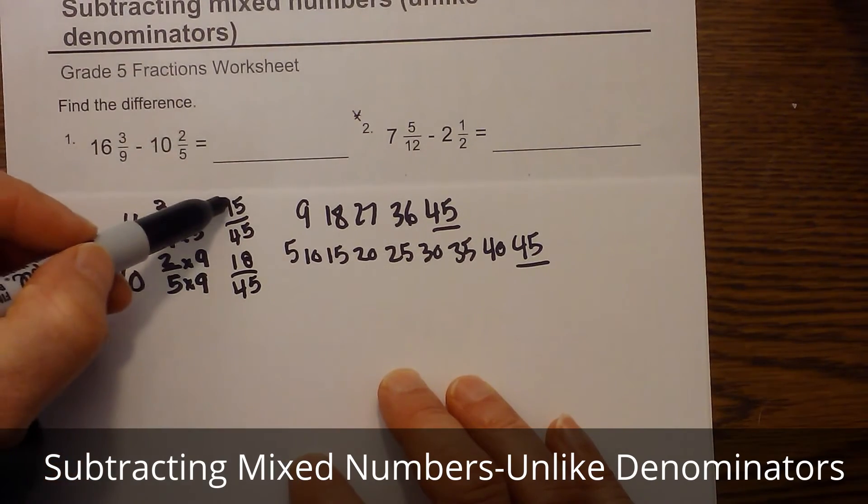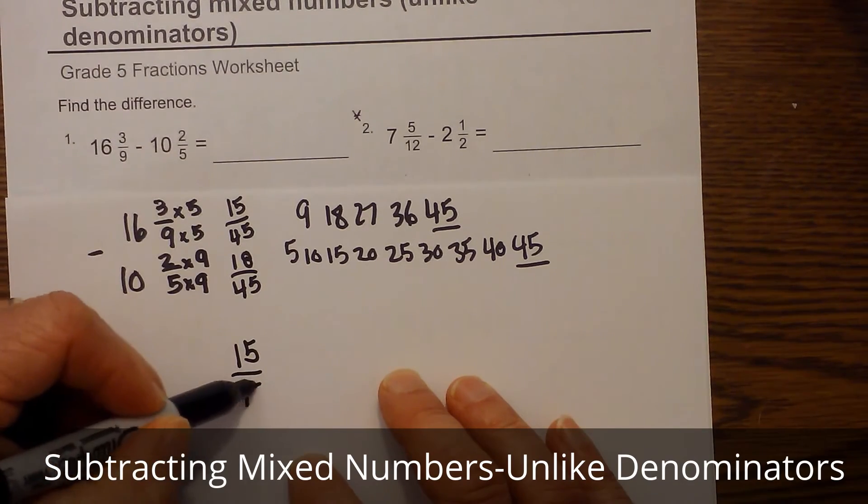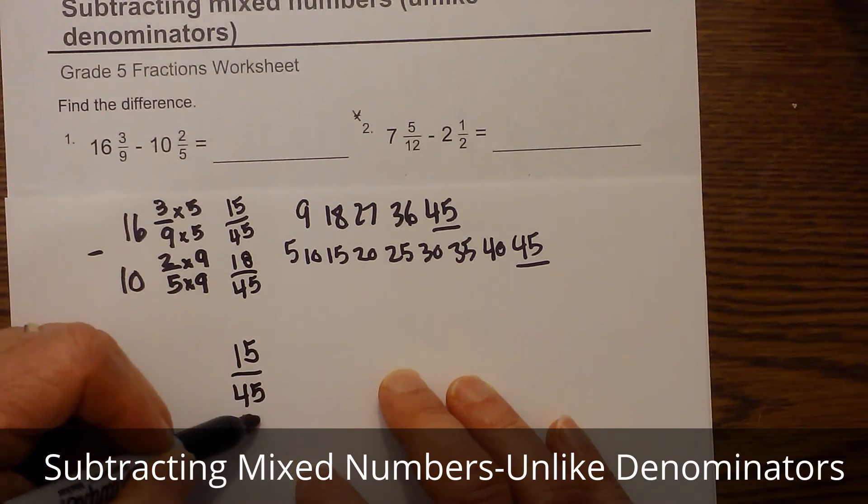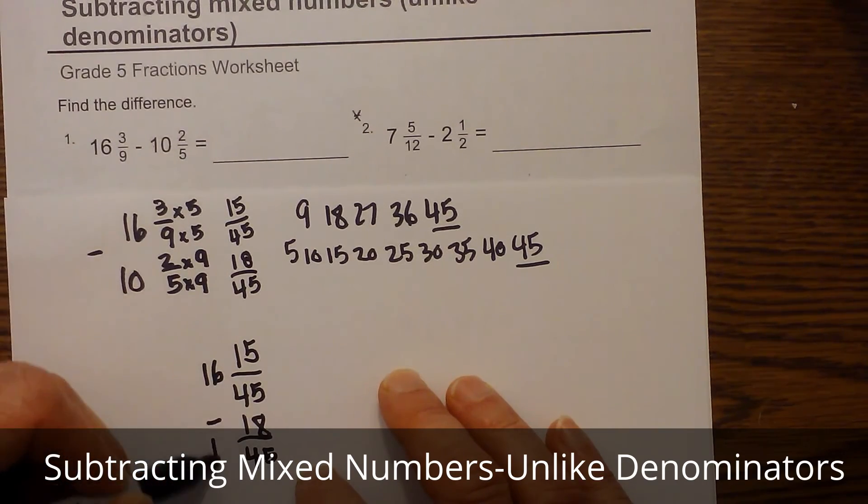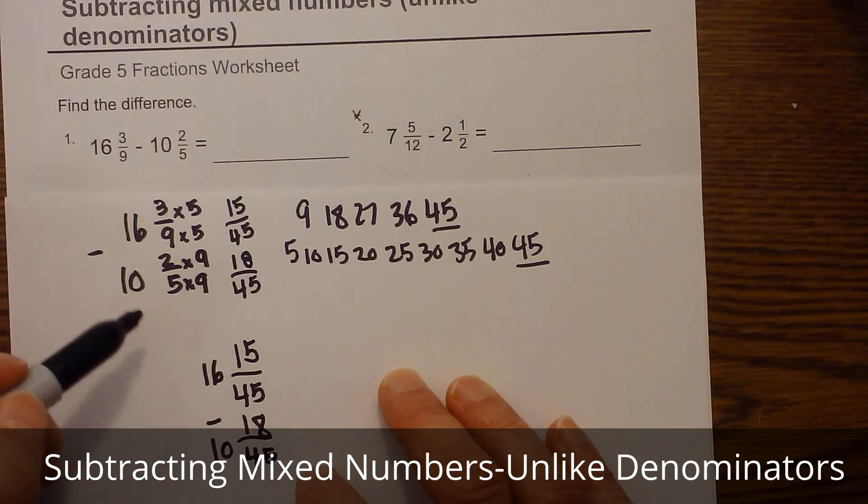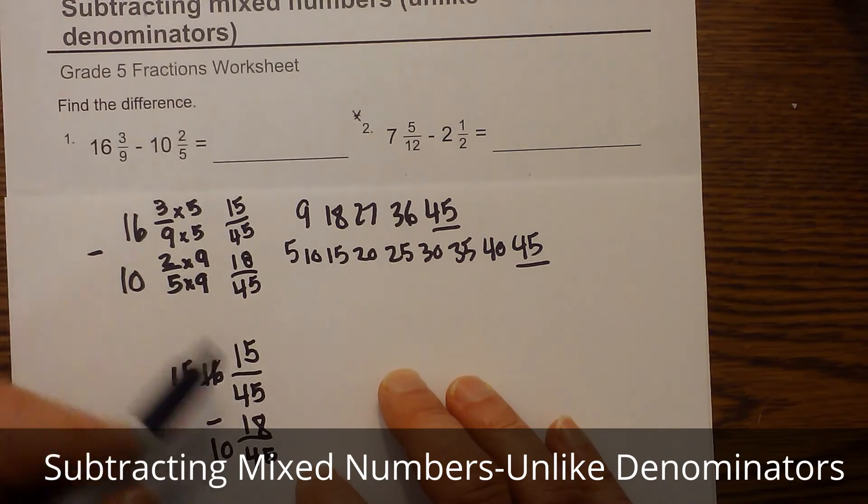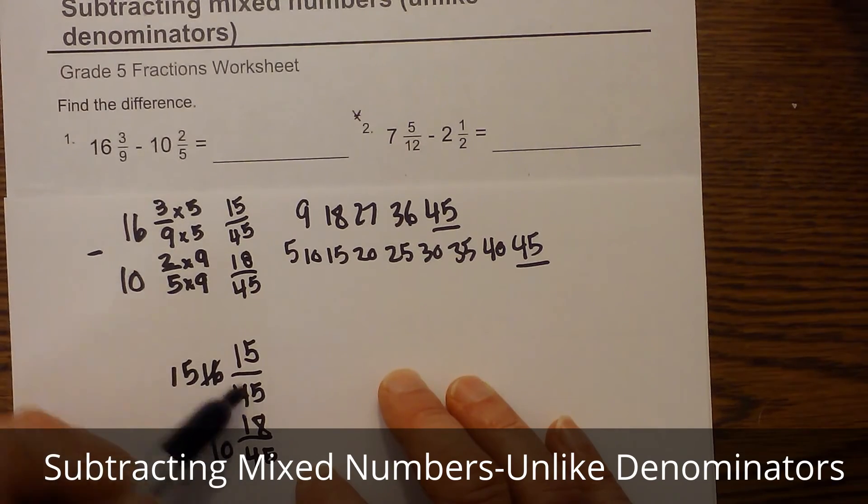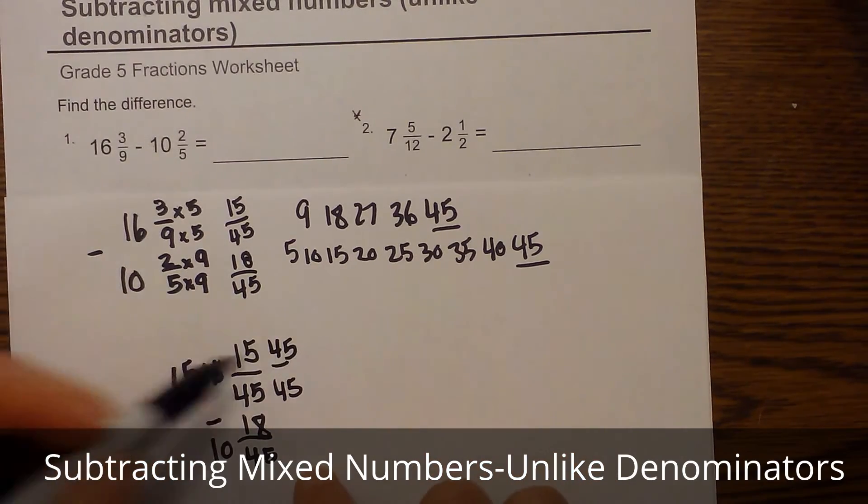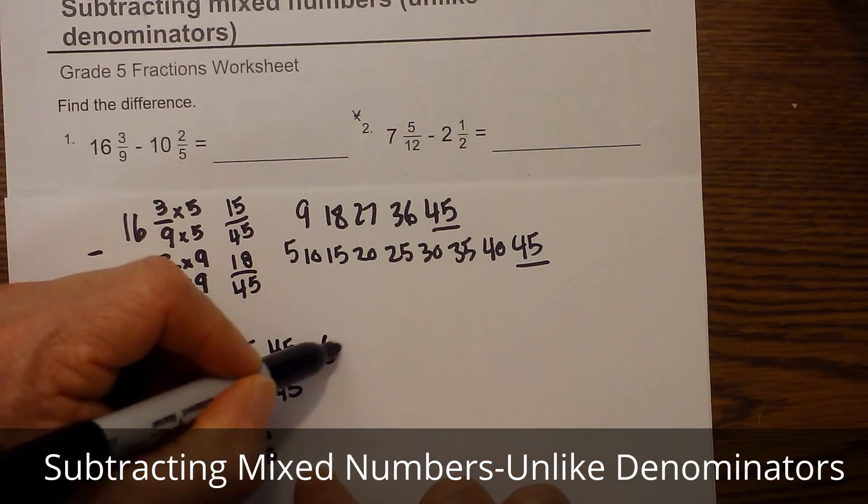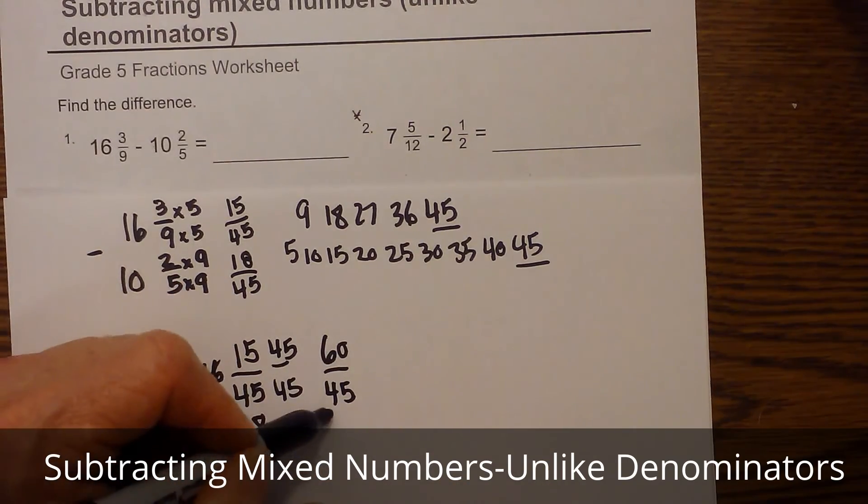Fifteen is smaller than eighteen, so I'm going to rewrite this. We have fifteen forty-fifths minus eighteen forty-fifths, and then we have a sixteen and a ten. So I need to merely borrow one from the sixteen, which becomes a fifteen. I take the denominator and write it over itself, and then I just add fifteen plus forty-five is sixty over forty-five minus eighteen over forty-five.